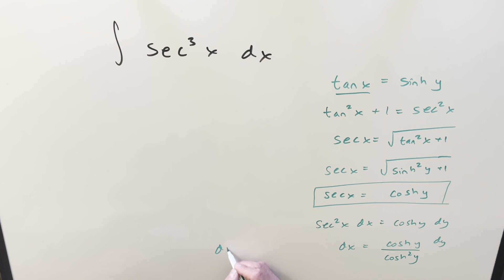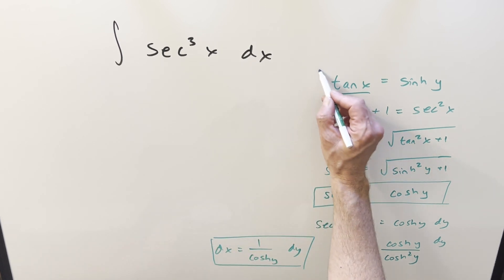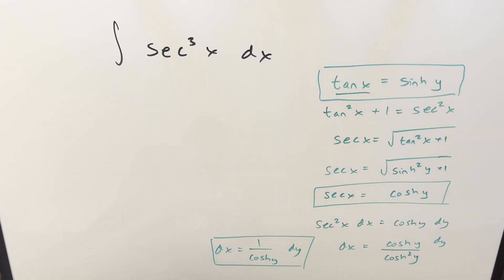So cleaning this all up, what we're going to have is dx equal to one over cosh y dy. So I don't think we need a lot of this, but let me box the stuff that I do think we need. Maybe we need this first one. I can't remember. Let's just go ahead and see what happens.